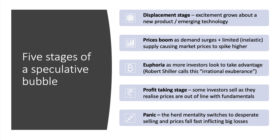So why do bubbles happen? Speculative bubbles are a cause of market failure, with prices well out of line with fundamentals. There is something called the efficient markets hypothesis which challenges the idea that bubble behavior is irrational, but most economists believe that financial markets in particular can be exposed to speculative phases. Some economists argue there are actually five stages of a speculative bubble.